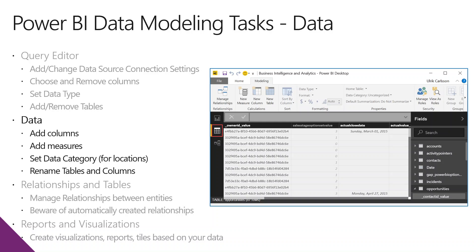For data types, you can set whole numbers, decimals, dates, date-times, text, URLs — lots of different data types that you can define. And the data category — you can define it as a particular type of data, like if it's a location, a city, a zip code, a URL. You can let Power BI know what it is and that gives you different options. For example, if it's a location, that will give you the ability to map things.